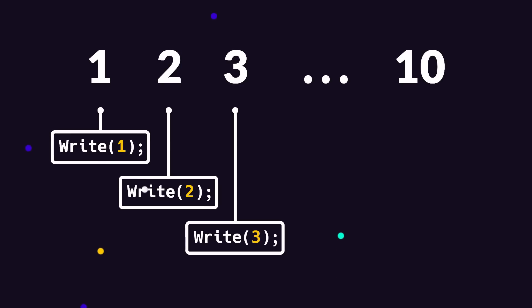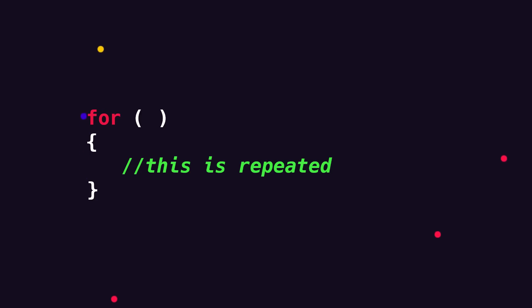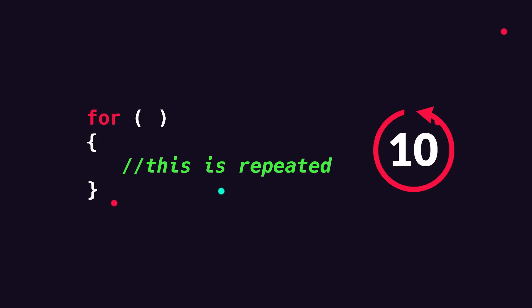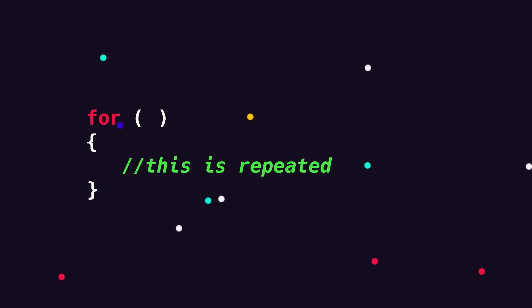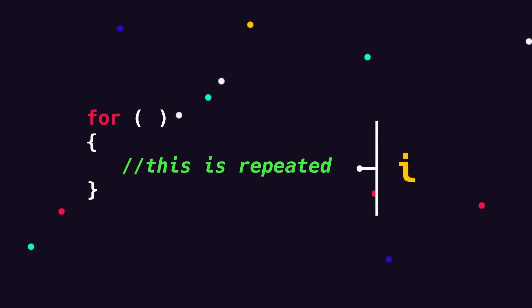For loops are used when we want to repeat code a certain number of times. Let's say we want to print out the numbers one through ten. You could just write console.writeline ten times, but that quickly gets pretty cumbersome. Instead, we would simply use a for loop that runs ten times — we say that the for loop runs for ten iterations. The cool thing about a for loop is that it gives us a variable that tells us what iteration we're currently at. We often just call this i.